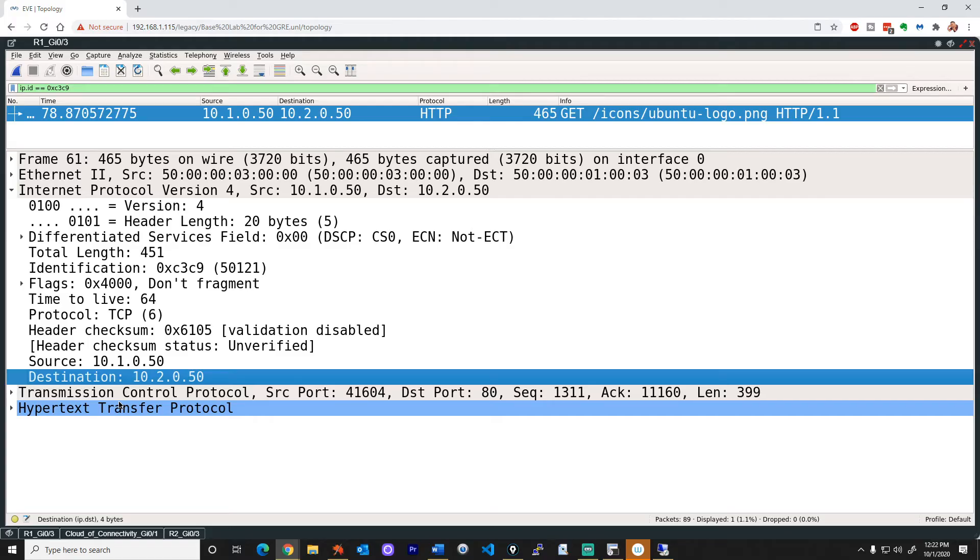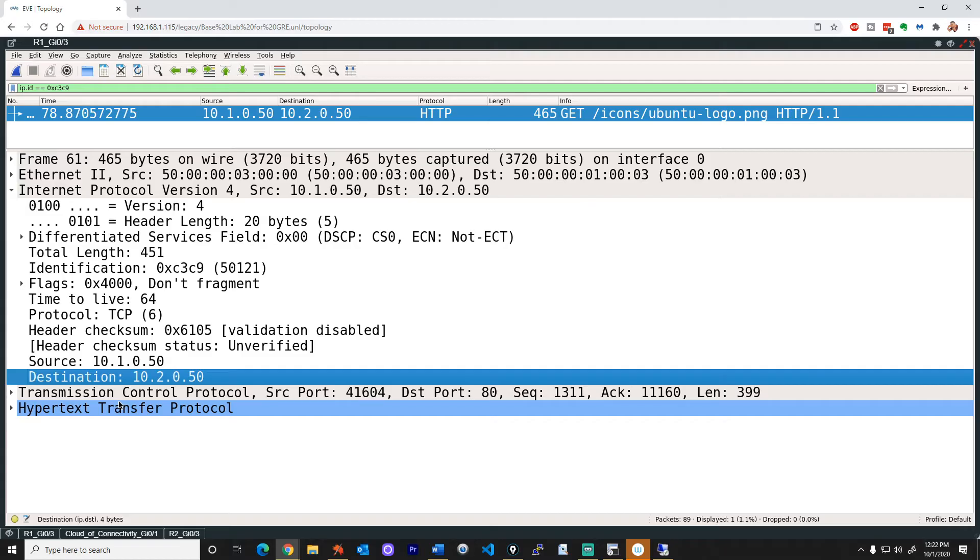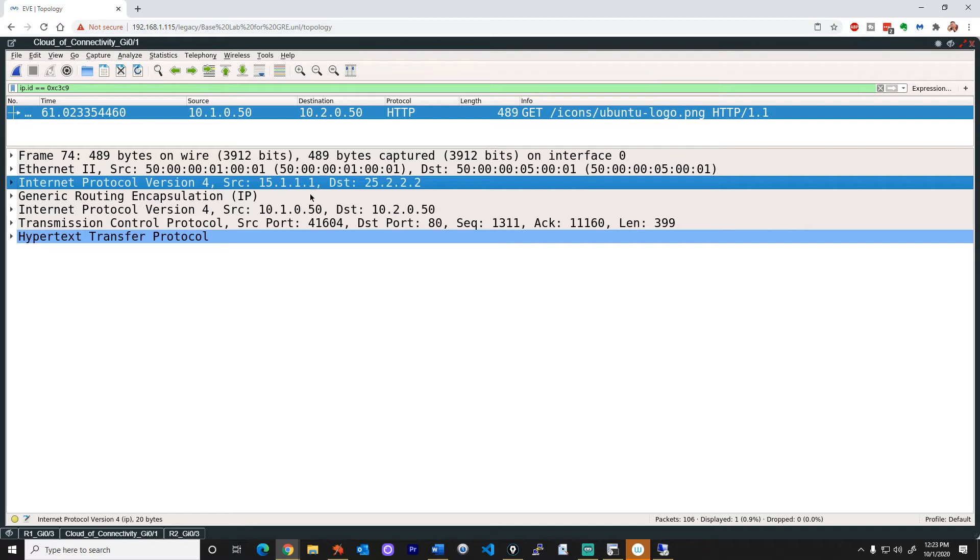Now, let's take a look at what happens after R1 receives it, re-encapsulates it, and uses itself as the source address, and the destination, the other side of the jungle, being R2, which is the other end of the tunnel. So once R1 gets the packet and sends it, it's going to put on a new IP header with itself as a source, and the destination being R2, the other end of the tunnel.